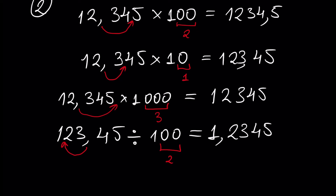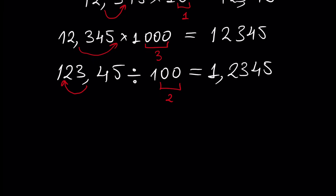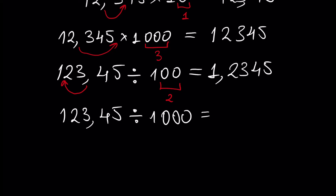Last example: let's divide our number 123.45 by 1000. Since we have three zeros, we move the floating point three times to the left side. The result will be 0.12345. This was everything for today — like and subscribe and thank you for your attention.